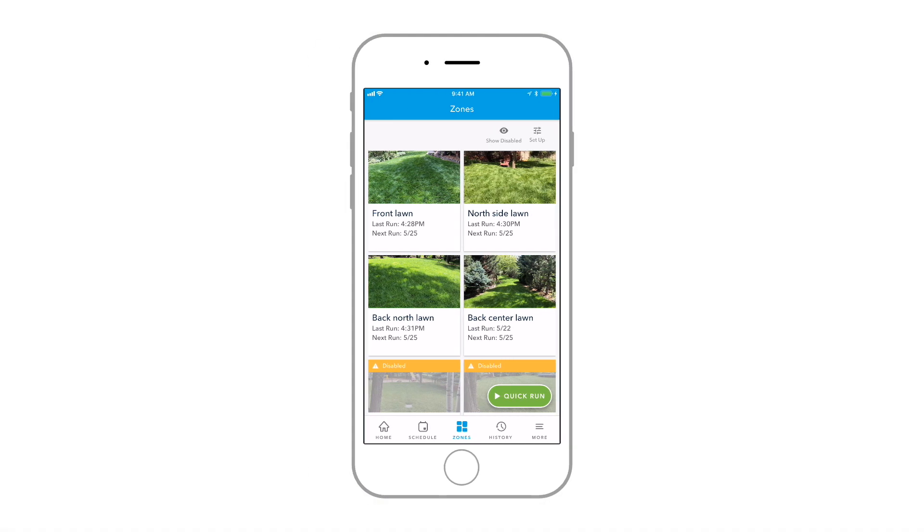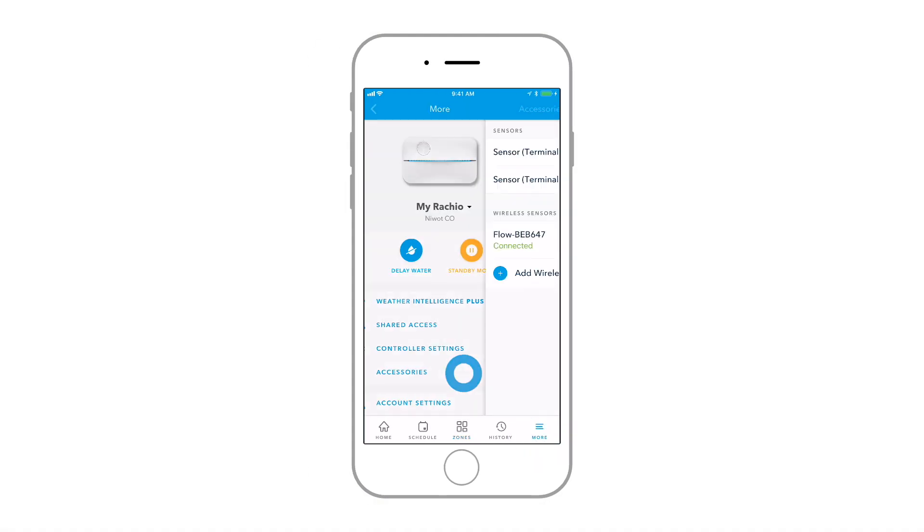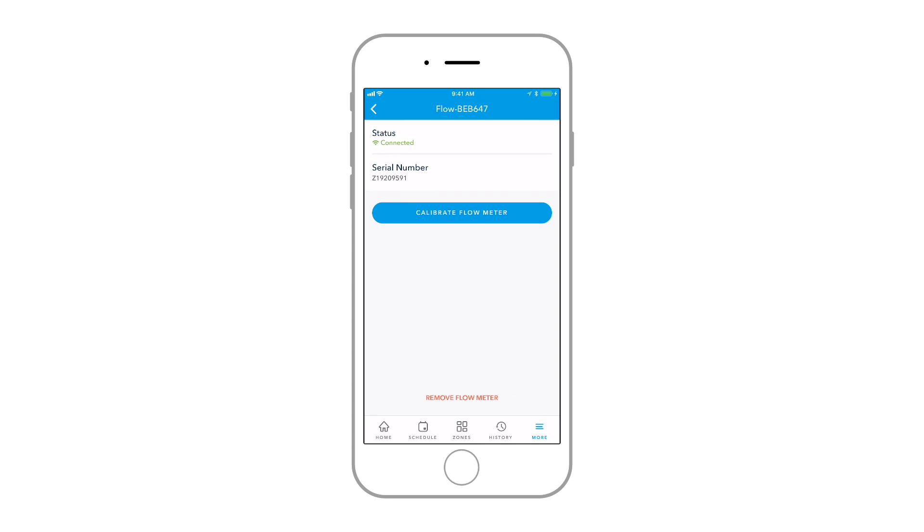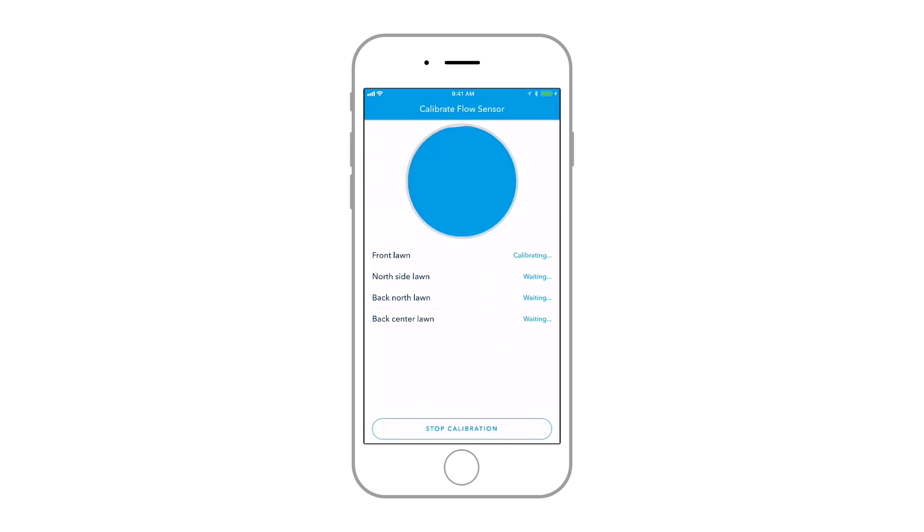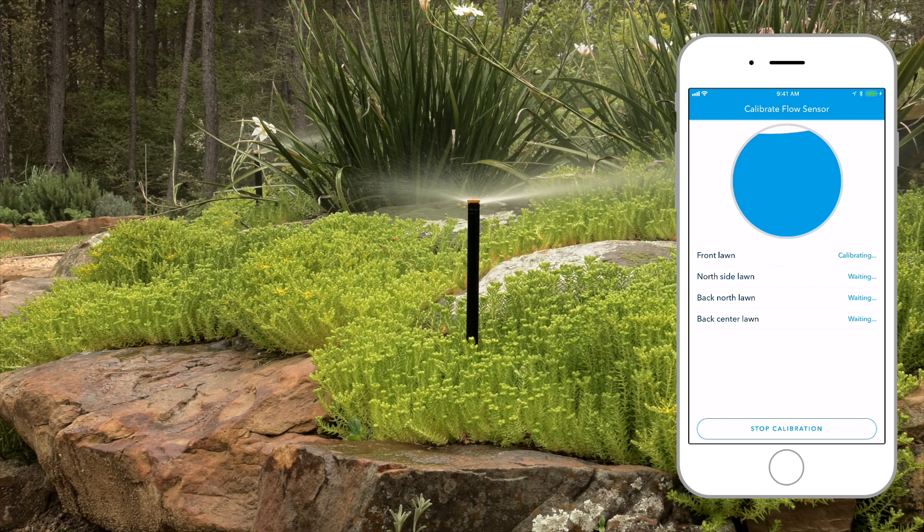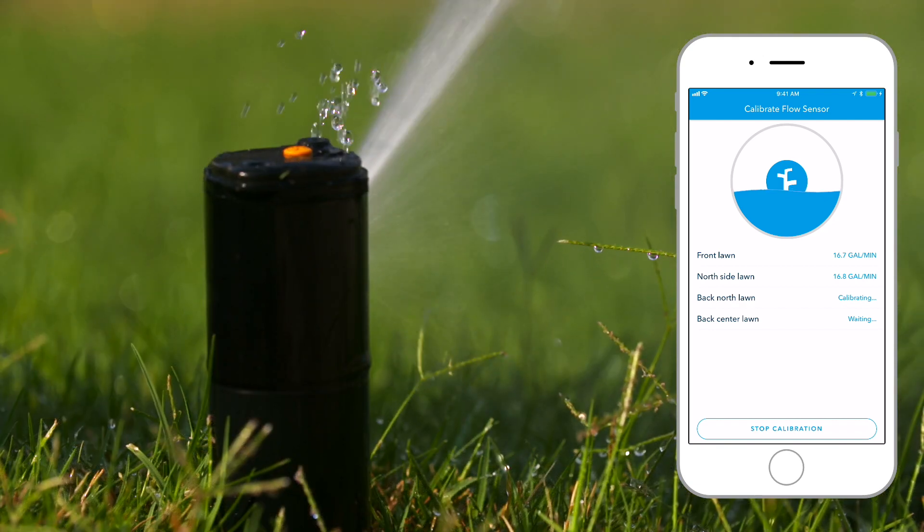In the Rachio app, select More, Accessories, then the Flow Meter option. Follow the prompts to calibrate the meter. Be sure to follow the tips in the app about the water use in your home while calibrating. When you're ready, it will run each zone for a minute to measure the water flow.